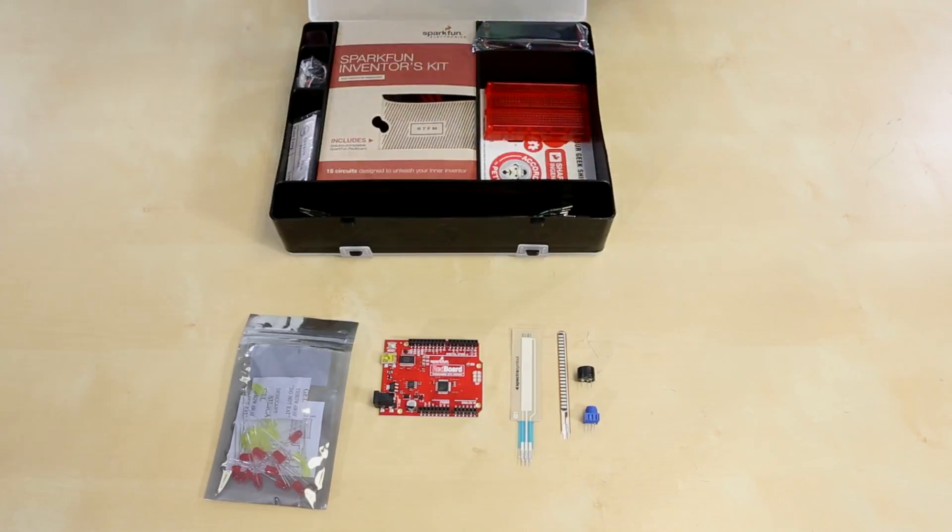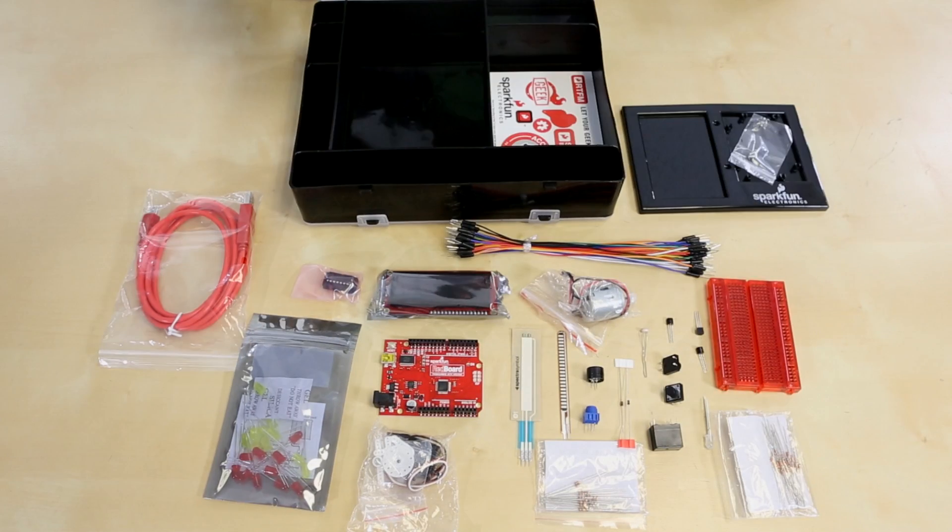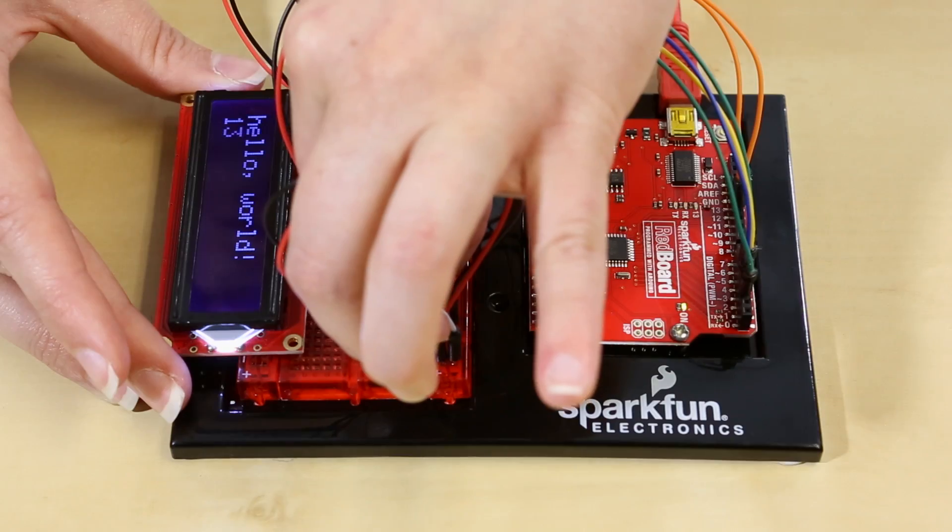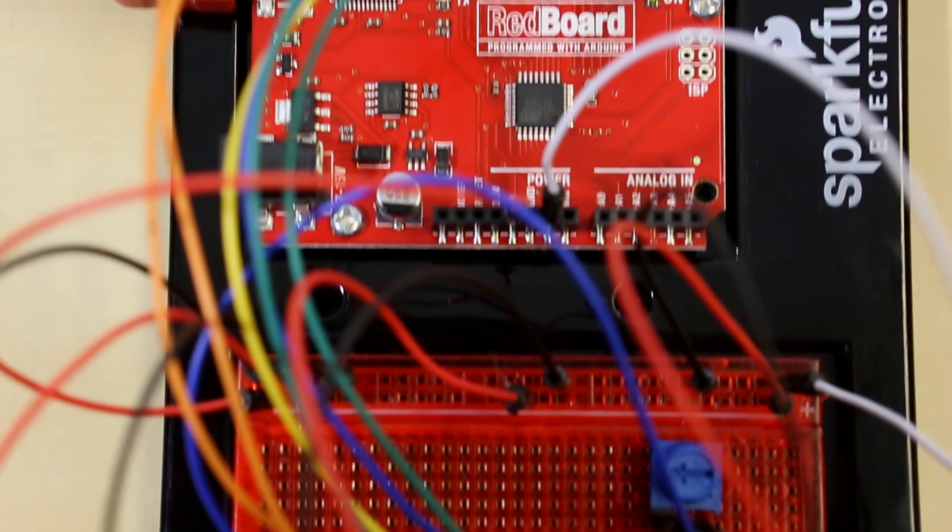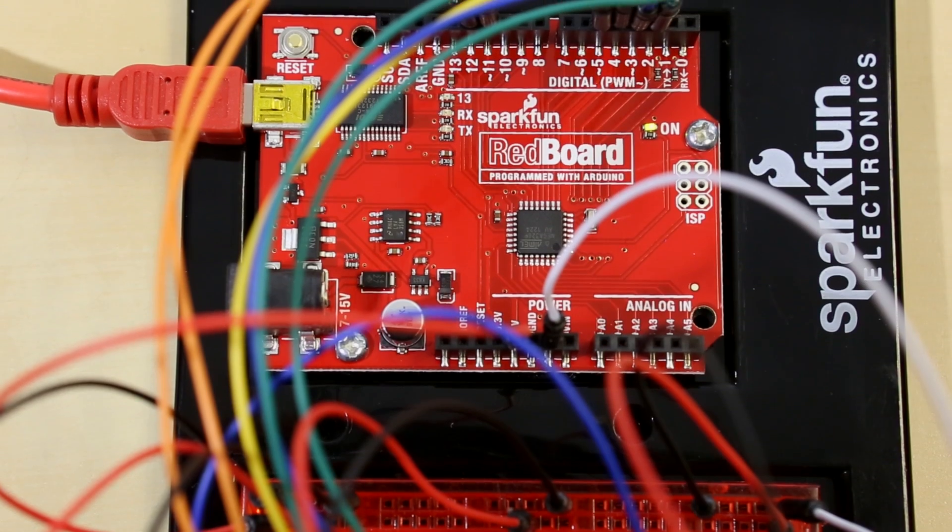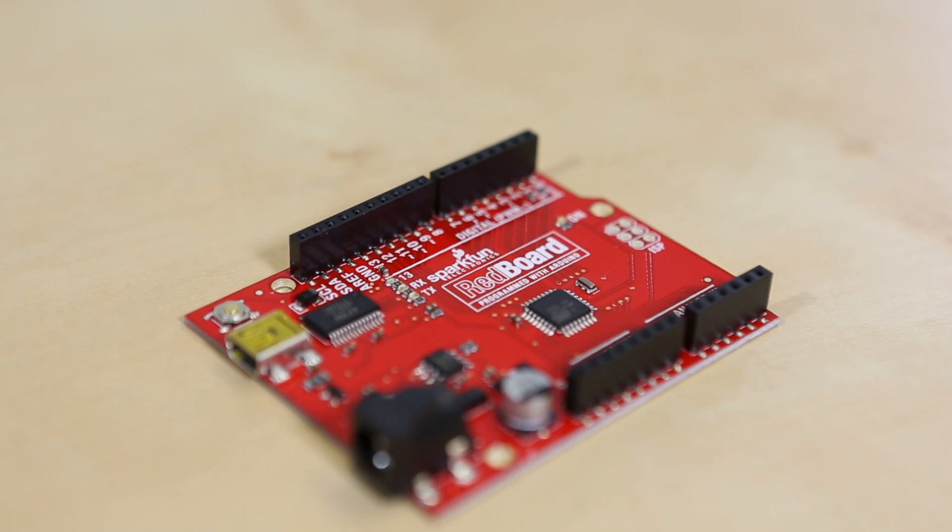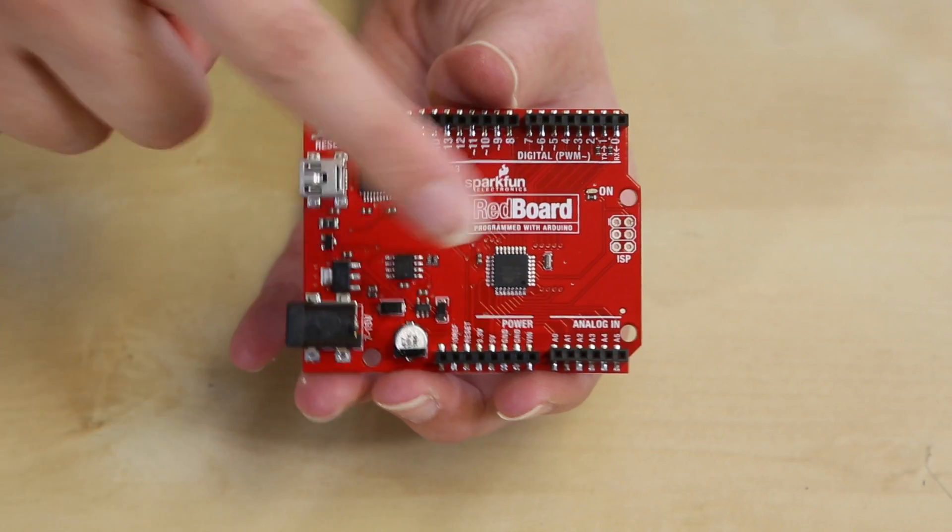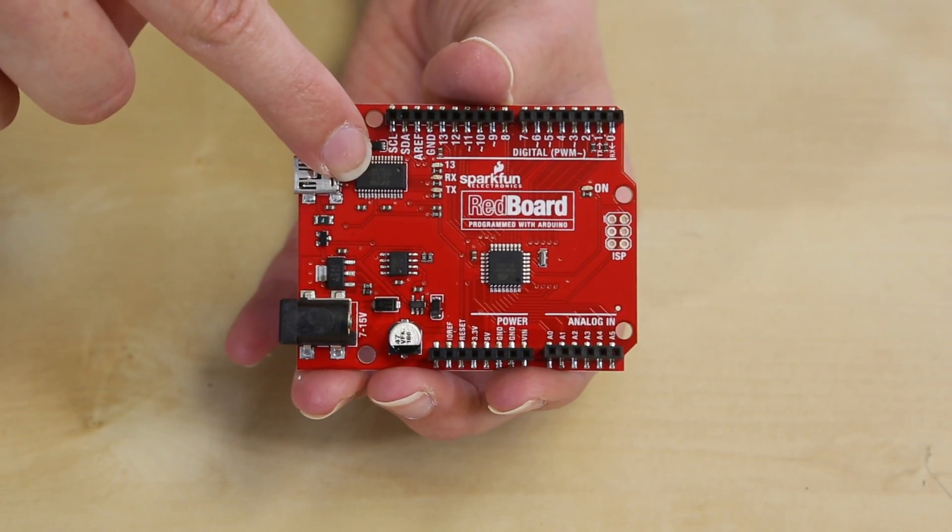The SIK includes parts and pieces to put together 15 electronic circuits varying from simple to more advanced. At the heart of the kit is the Arduino compatible red board which combines our favorite features from different Arduino boards such as Arduino Uno bootloader and the FTDI.